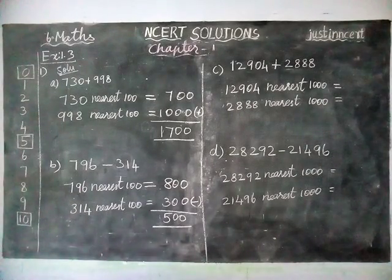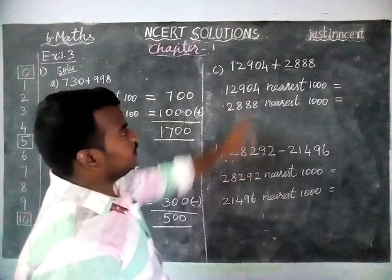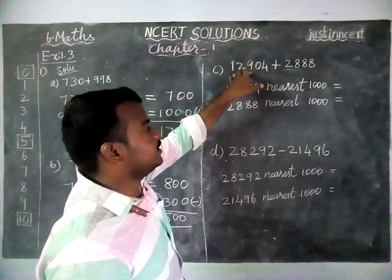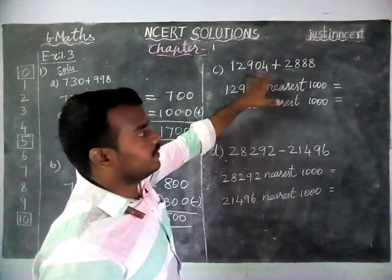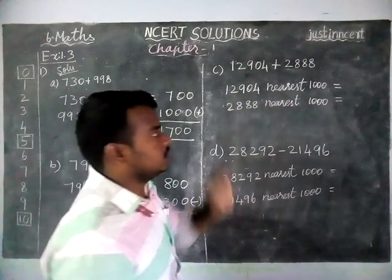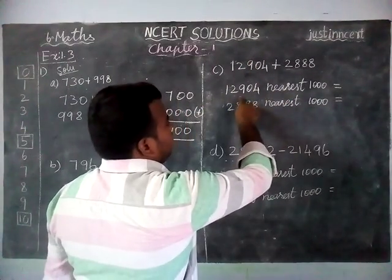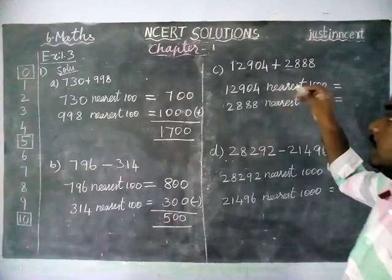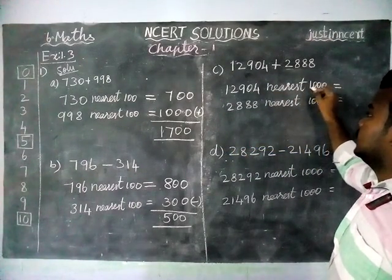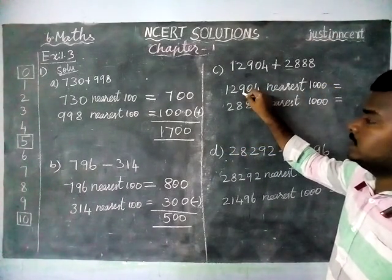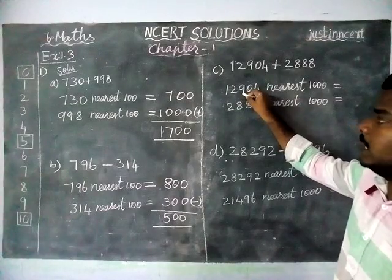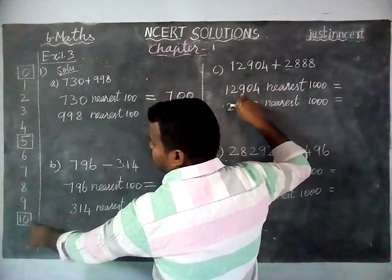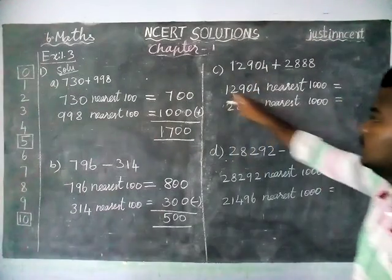And next, option C. Here they have given a 5-digit number. When they are giving a 5-digit number or 4-digit number, we can round off to nearest 1000. So now 12904 is given. We are going to check it — when rounding off to nearest 1000, the 100th place we have to check. Here the 100th place is 9. When 9 is coming, next 1000 we have to choose. Next 1000 is 13000.